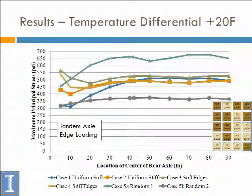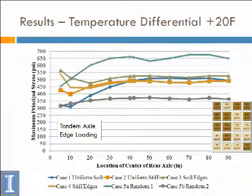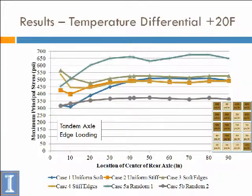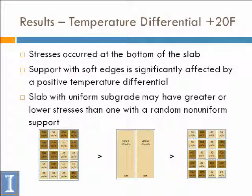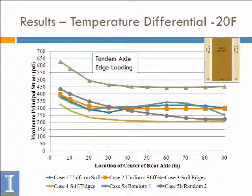Now if I have a positive gradient — a daytime gradient where the slab curled downward — the random case produces much higher stresses than anything else as the axle is placed near the soft area. With a soft spot here and positive curling producing bottom stresses, this turns out to be the worst combination. Interestingly, the other random case is the lowest again, suggesting random distributions of soft and hard is not a good idea and could be something to remediate. Having some kind of non-uniformity doesn't tell you if it actually produces high stresses or not.